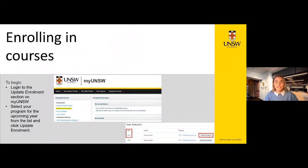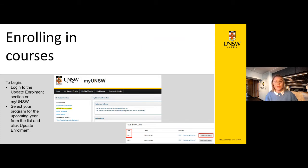Enrolling into courses is a two-step process. The first step is selecting your courses for the year you want to enrol in. Courses will fill up quickly, so I recommend enrolling for the entire year where you can to reserve your place, as you can always change your enrolment before the enrolment deadline, which is Week 1 of each term. First, log in to the update enrolment section on myUNSW, then select your programme for the upcoming year from the list and click update enrolment. If you're a new student and can't click update enrolment, make sure you've completed Part 1 and Part 2 of your offer acceptance.